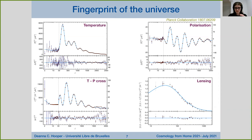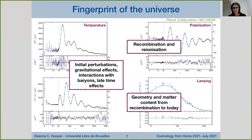Broadly speaking, we can get many different types of information from these spectra. The temperature spectrum gives us information about the initial perturbations, gravitational effects, the interplay between the tightly coupled baryon-photon fluid, and late time effects. The polarization spectrum gives more insight about the time of recombination and reionization. The lensing spectrum provides information about the geometry and matter content of the universe between recombination and today — making it more of a late universe probe.